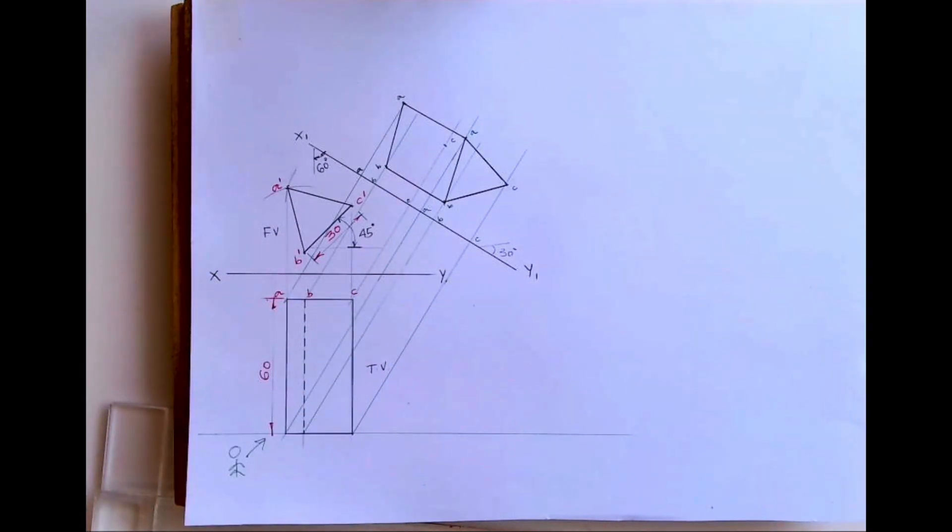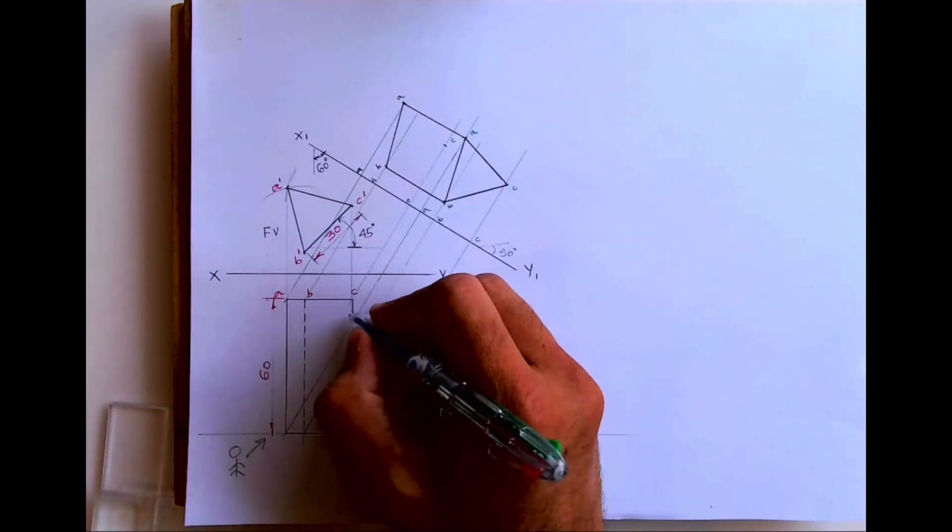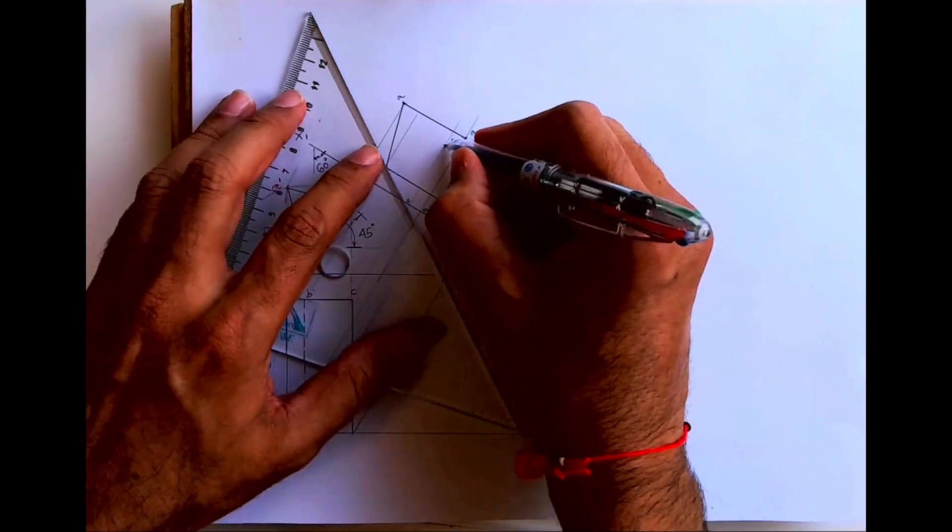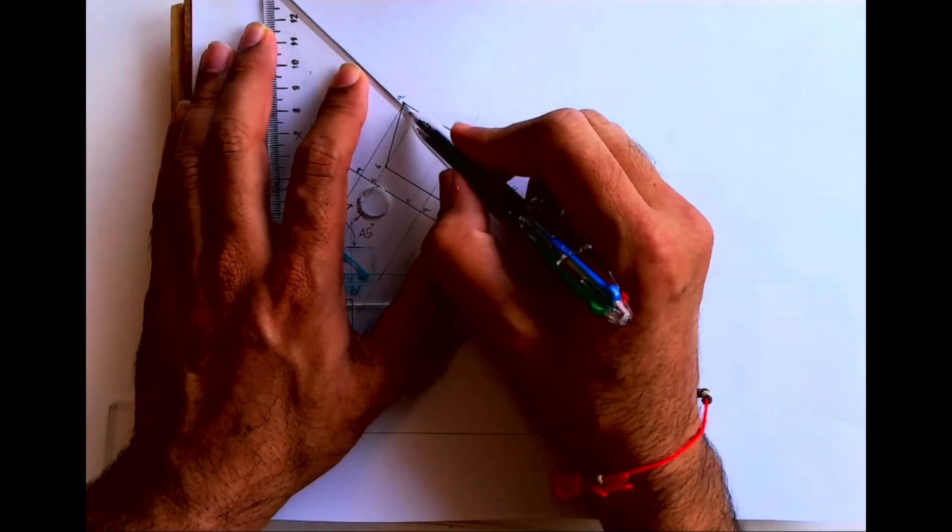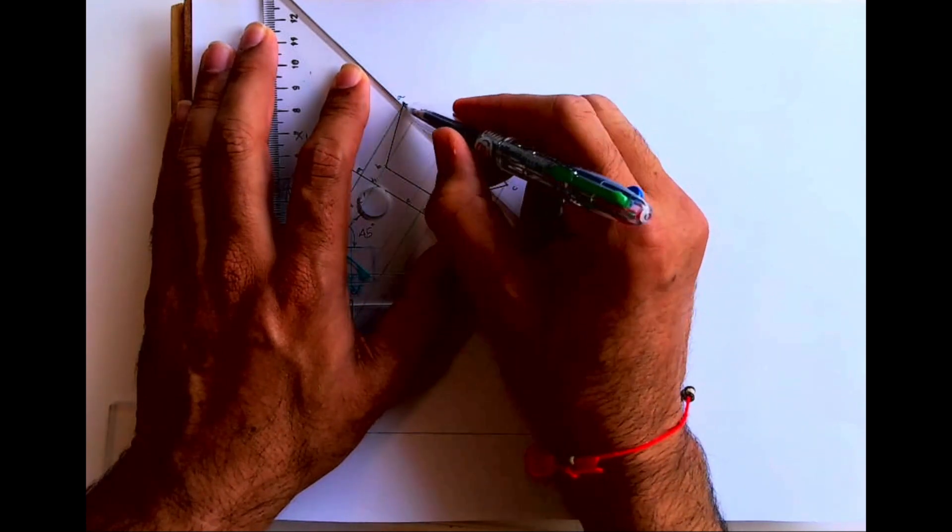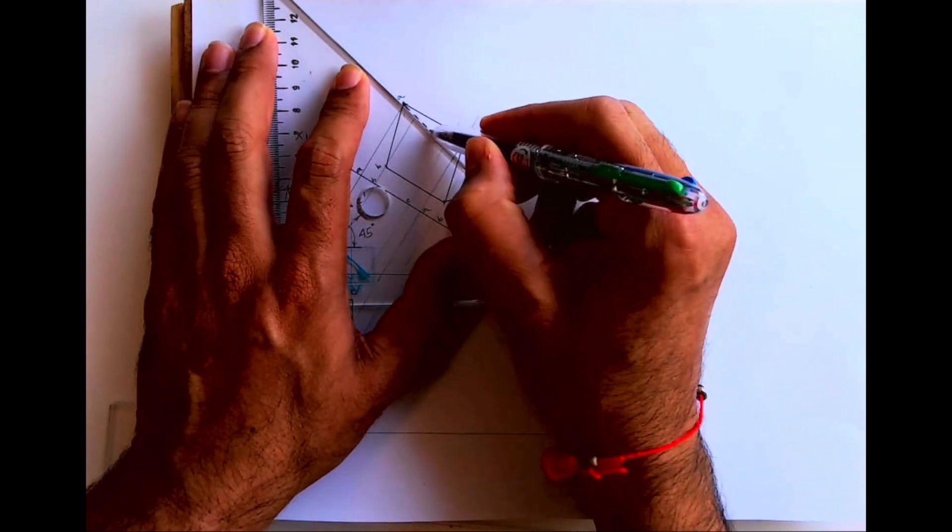So this is how you will get. Now if you see this point C, it is away from observer. So all the lines passing through C would be dotted: A to C, B to C, and C to C will be dotted.